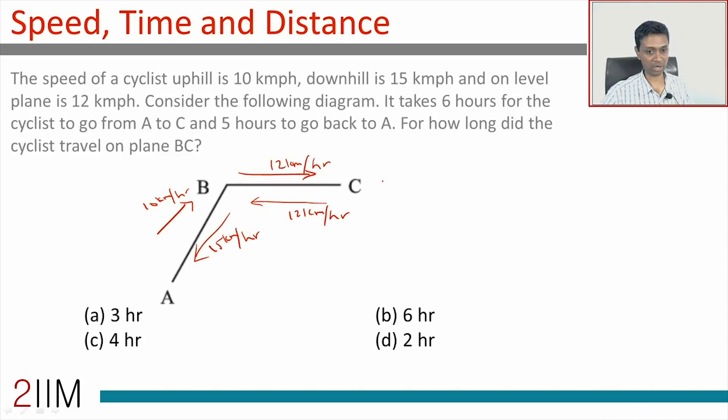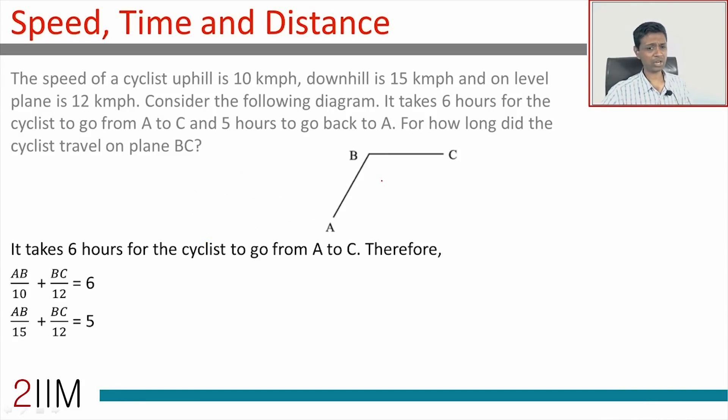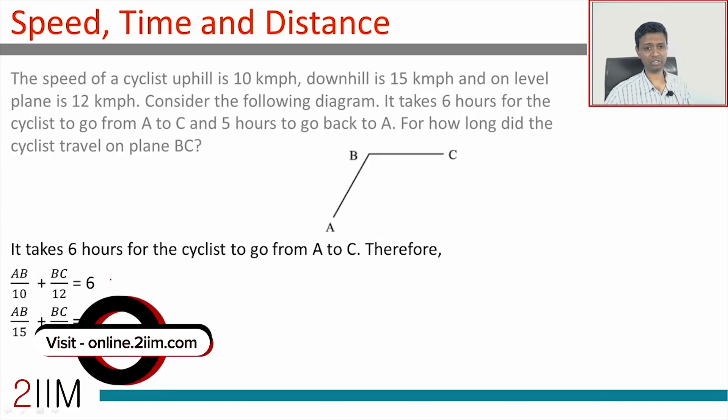The equation way of doing it is AB by 10 plus BC by 12 is 6. This is 10 kilometers per hour going uphill, so distance AB by 10 kilometers per hour.